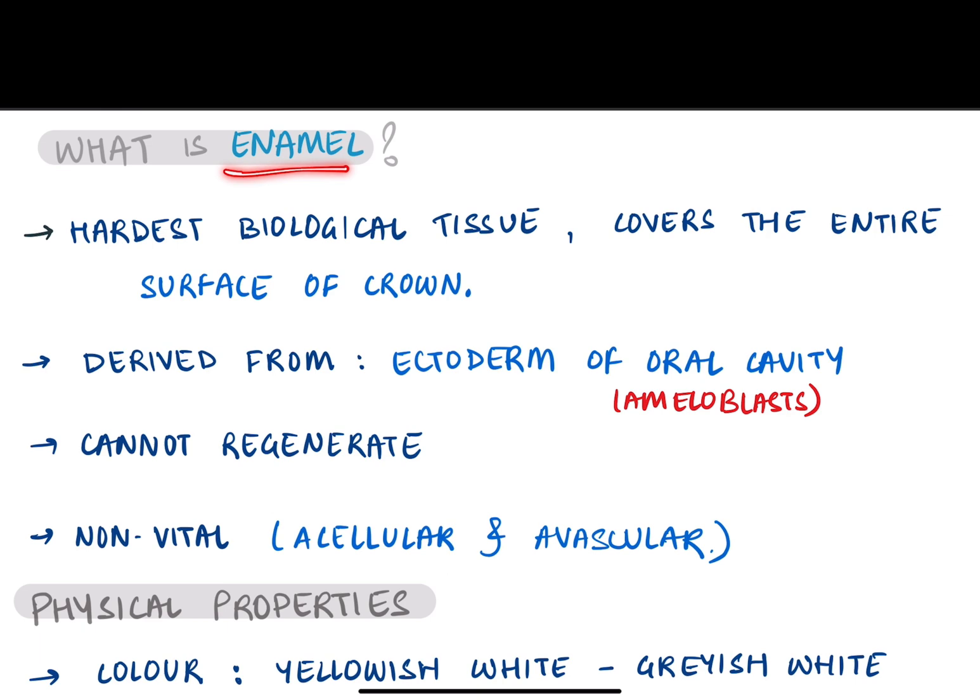Enamel is the hardest biological tissue in the human body and it is derived from ectoderm, that is, from epithelium.